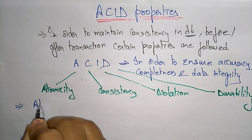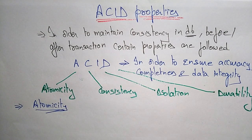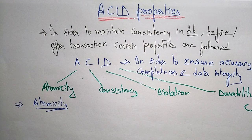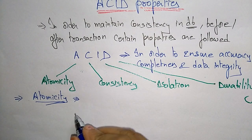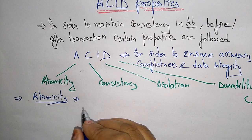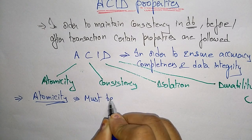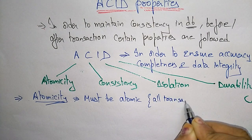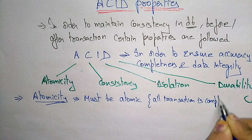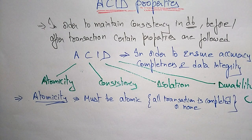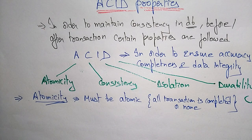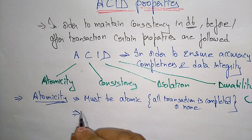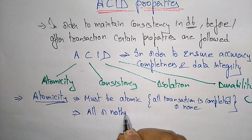Let us discuss one by one. First is Atomicity. What is Atomicity? It states that a transaction must be atomic. Atomic means either all of its operations are executed or none of the operations are done. If none are done, the database is unchanged. Atomicity means it has to do all the operations or it does nothing at all. This is also called the 'all or nothing' rule.